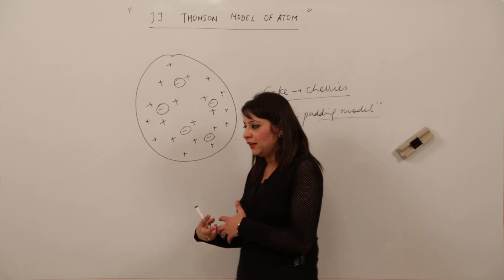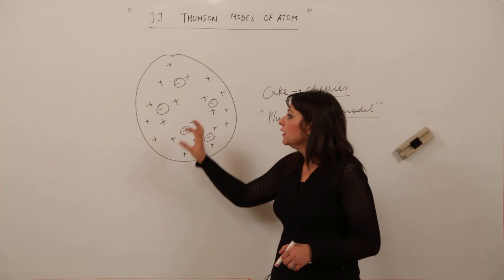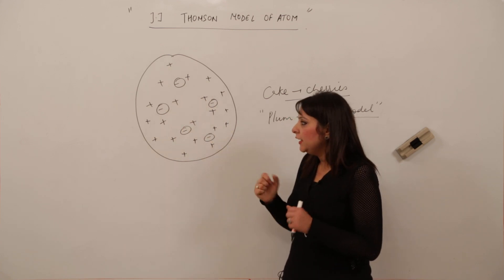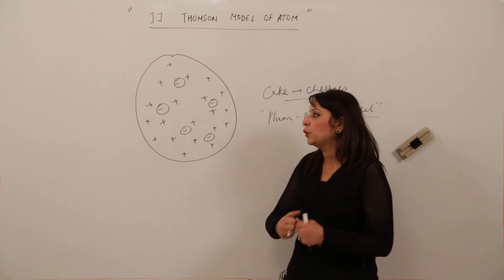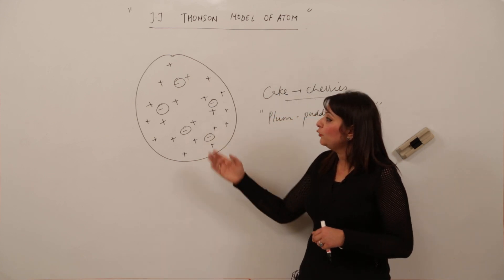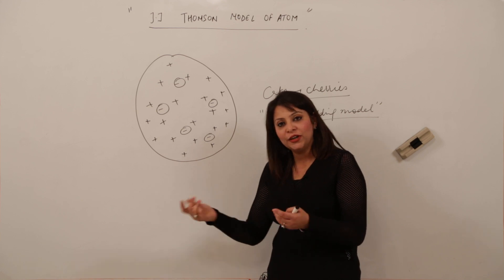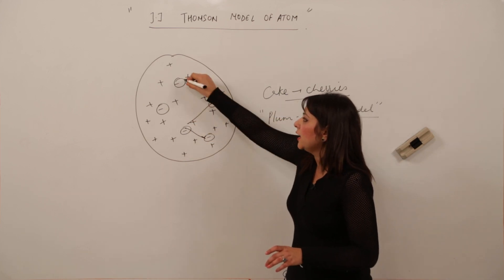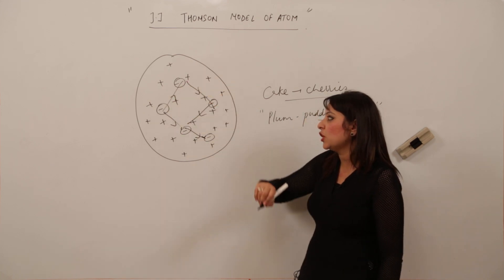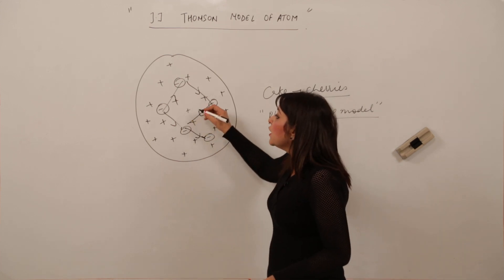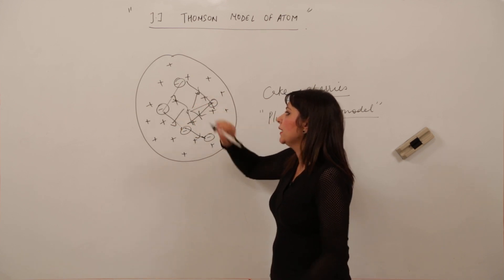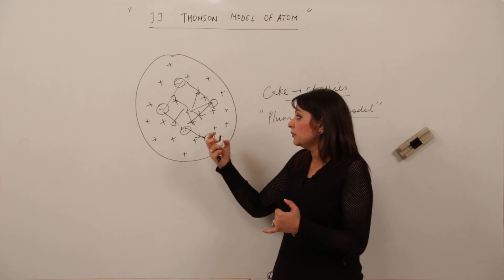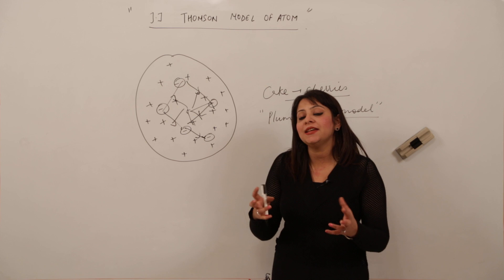Thomson knew scientists would raise this question. He argued that the repulsive forces between the negative charges are exactly balanced by the attractive forces they experience from the center of the atom. Because these forces are balanced, the electrons remain scattered throughout the positively charged sphere.